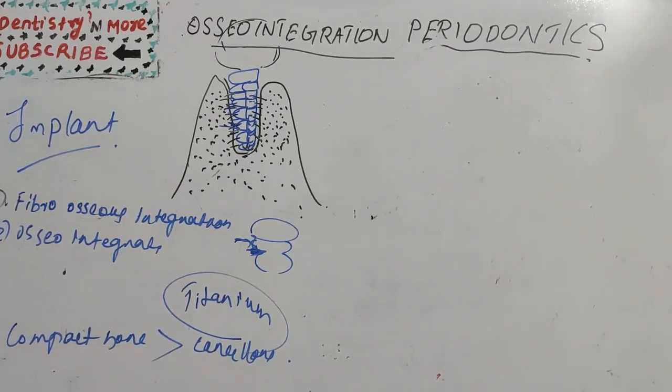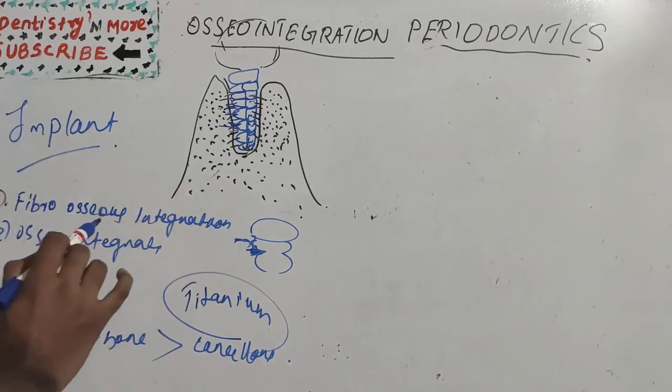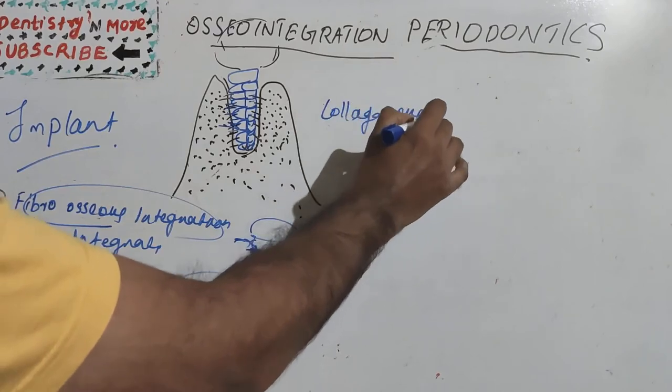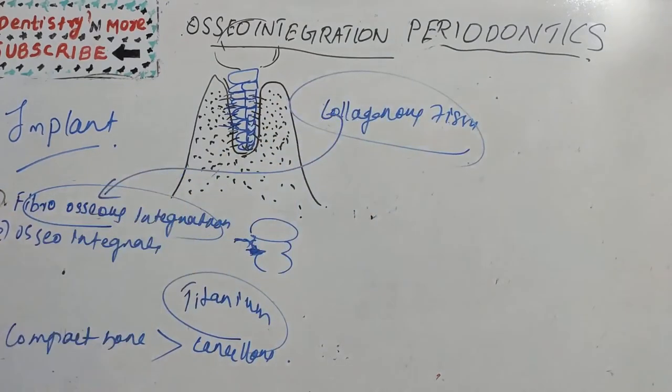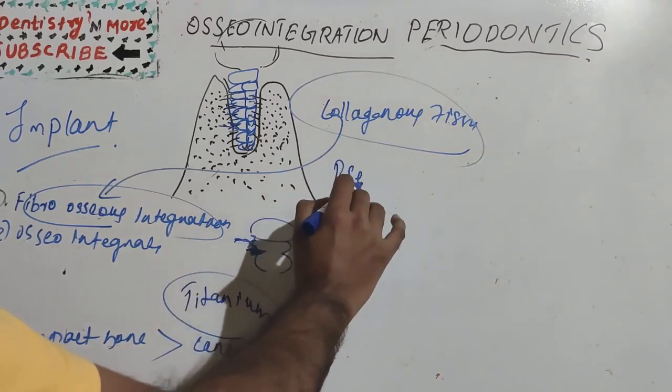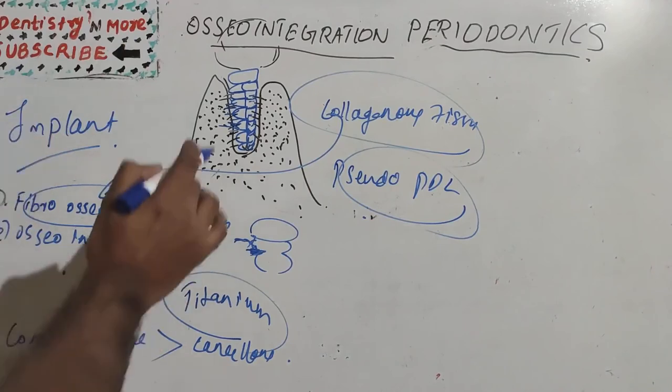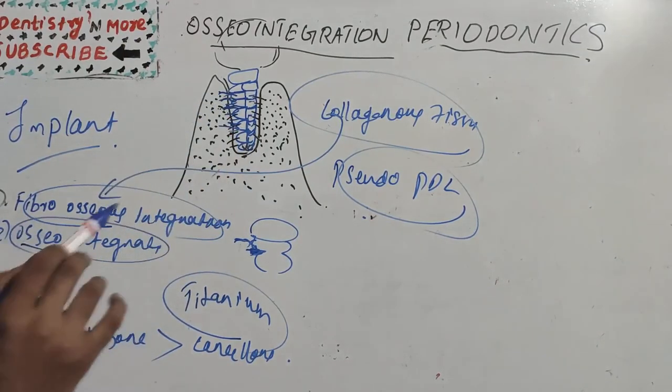This is the osseointegration concept - a direct contact without any interface, without any fibrous tissue between these two. But what about fibroosseous integration? It is a contact established between the bone and implant with the interposition of a healthy, dense collagenous tissue. In this, soft tissue such as fibers and cells are seen between the implant and bone surface. Such fibrous tissue has been called as pseudo-periodontal ligament. Actually, this is not good for implant, which will not be a very good attachment apparatus.